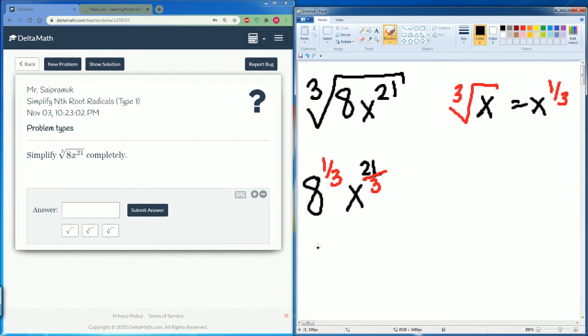So 8 to the 1/3 is just 2, x 21 divided by 3 is 7. So the answer is 2x to the 7th power.